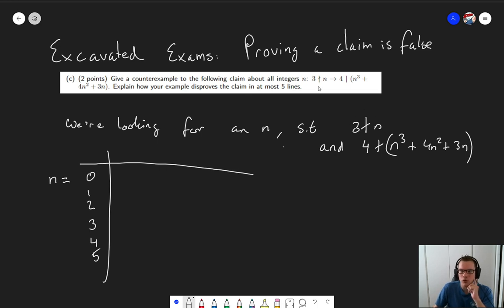And remember, we're looking for two things. The first part of the implication should be true. 3 should not divide n. And the second part of the implication, 4 divides blah, should be false. In other words, 4 should not divide n to the third plus 4n squared plus 3n. So let's take a look. 0. Does 3 divide 0? It does. So this thing is false. So this one doesn't work.